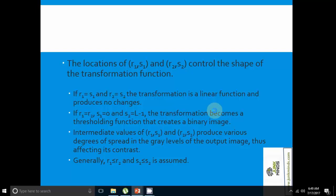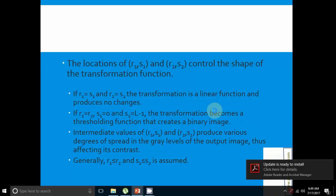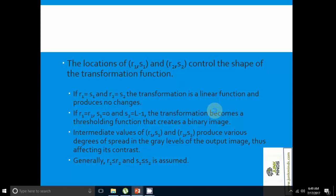The locations of (r1,s1) and (r2,s2) control the shape of the transformation function. If r1=s1 and r2=s2, the transformation is linear and produces no change. If r1=r2, s1=0 and s2=L-1, the transformation becomes a thresholding function that creates a binary image. Generally, r1≤r2 and s1≤s2 is assumed.